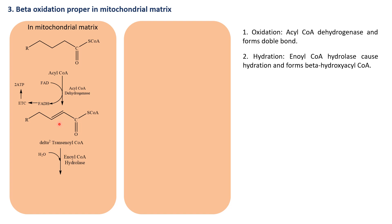The formed delta-2-trans-enoyl coenzyme A undergoes hydration in the presence of enoyl coenzyme A hydratase enzyme. During hydration, one water molecule is added, causing the double bond to shift to the next carbon atom and forming a hydroxyl group. This compound is called beta-hydroxy acyl coenzyme A.